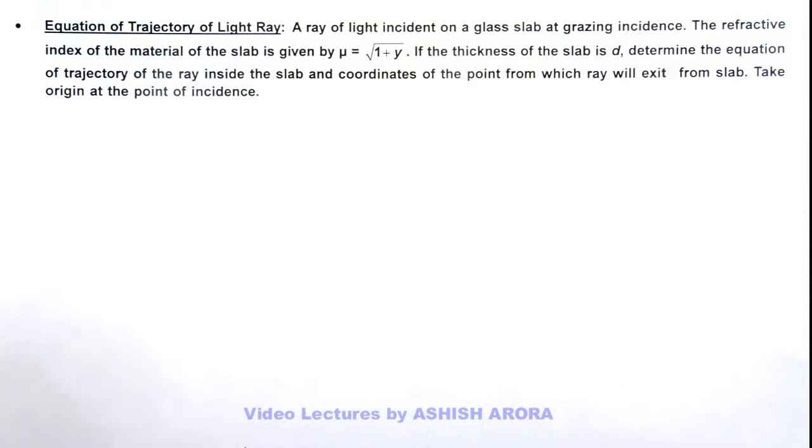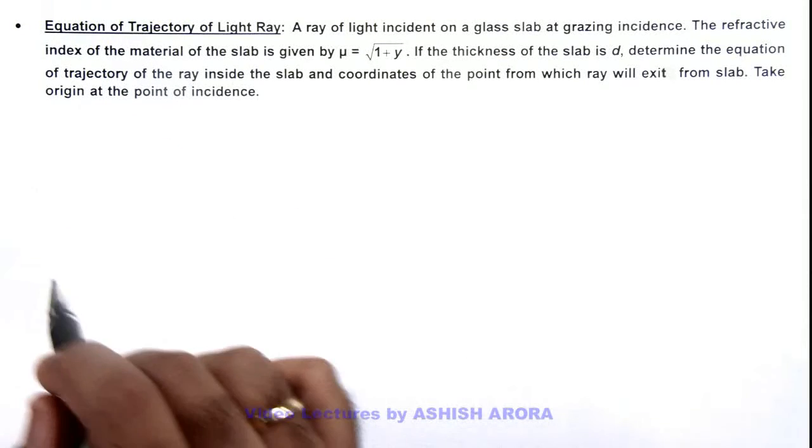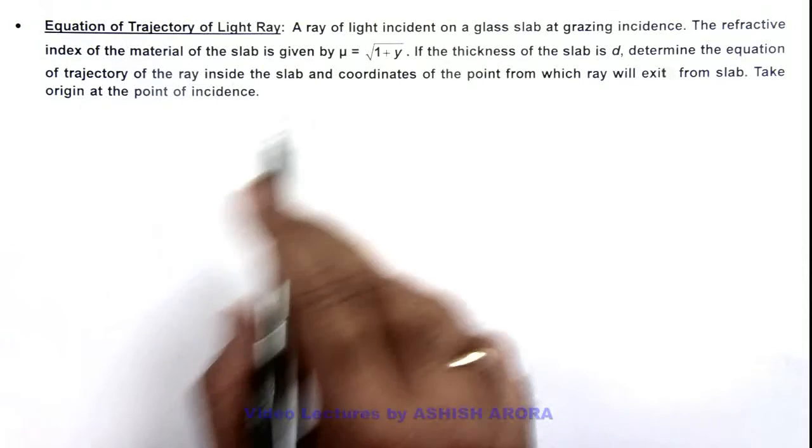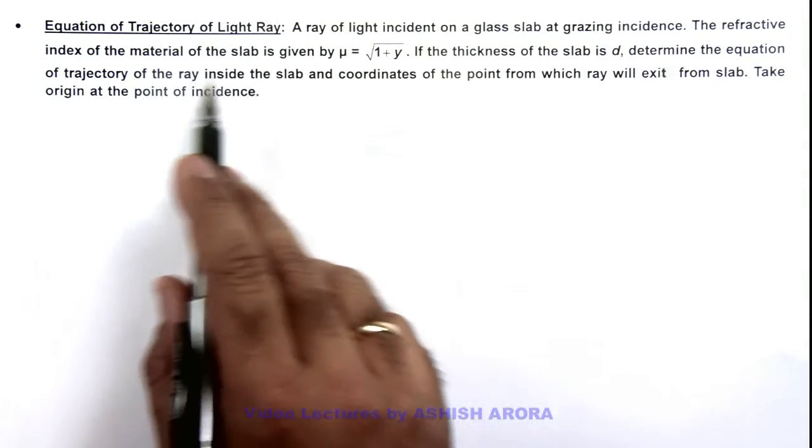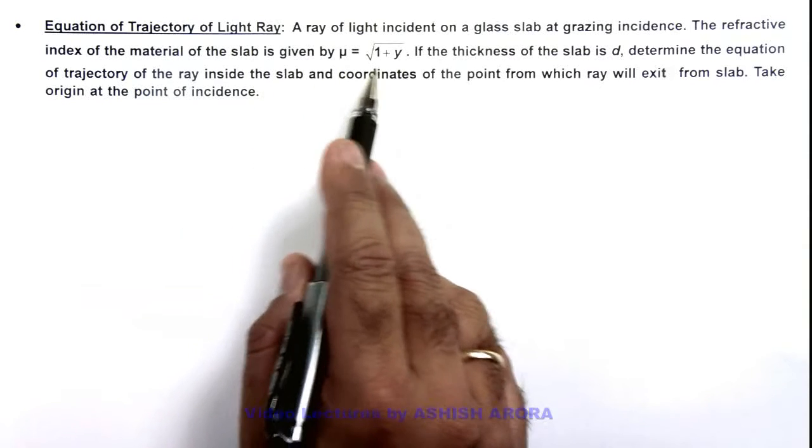In this illustration we'll discuss the equation of trajectory of a light ray. Here we are given that a ray of light incident on glass slab at grazing incidence, and the refractive index of material is given as μ = √(1 + y).